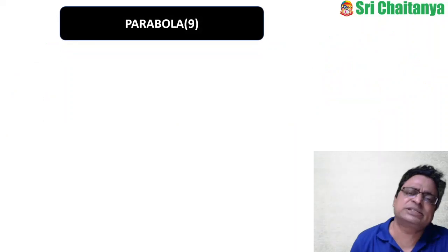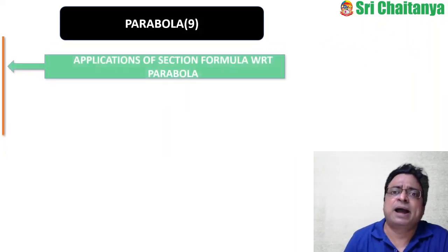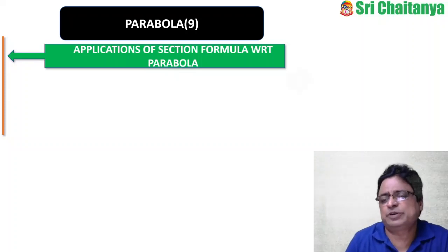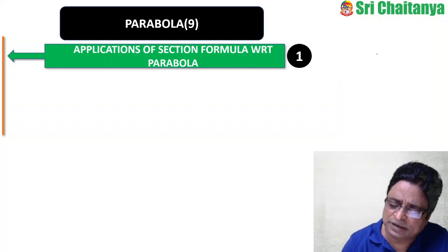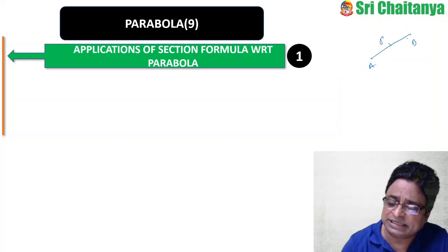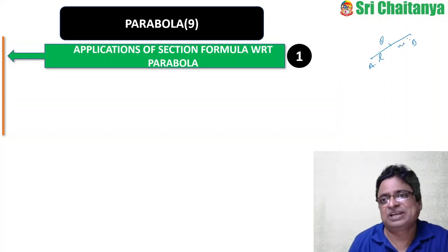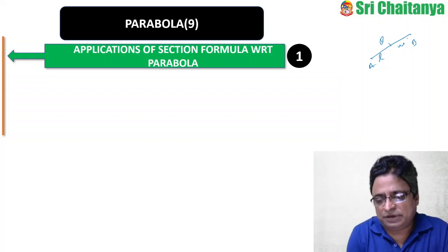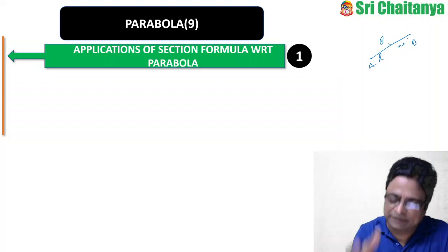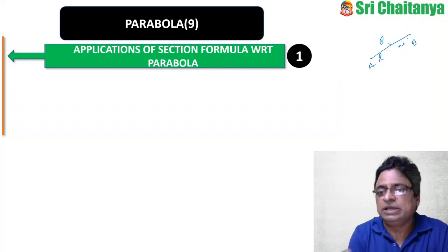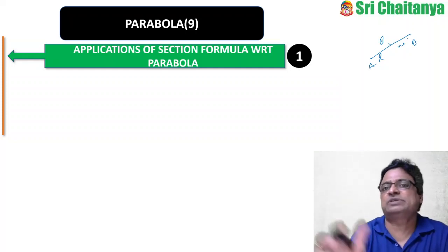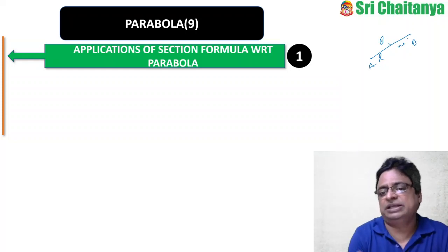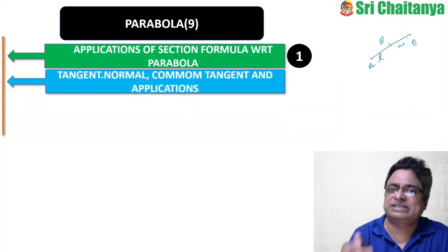Coming to parabola — 9 questions were asked out of 50. The first subtopic: applications of section formula with respect to the parabola — 1 question. This involves finding coordinates of a point dividing a line segment joining two parametric points (t-points) on the parabola in a given ratio, and then finding the locus. These are standard questions, some from previous JEE papers.